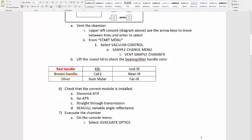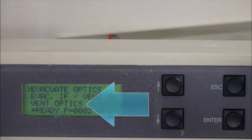The last step you need to take is to check that the correct module is installed. It is standard to use the Diamond ATR. If you did not vent the system when checking the beam splitter, do so now.